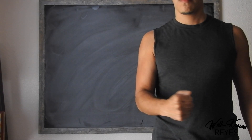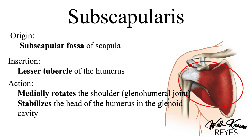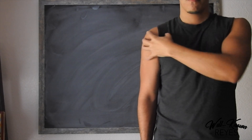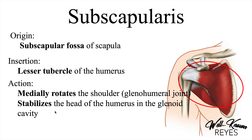The subscapularis's actions are to medially rotate the shoulder at the glenohumeral joint, as well as stabilize the head of the humerus in the glenoid cavity. All four of these muscles stabilize the head of the humerus in the glenoid cavity, making them fixators — they hold the head of the humerus in place on the glenoid cavity of the scapula, making them fixators of the glenohumeral joint.